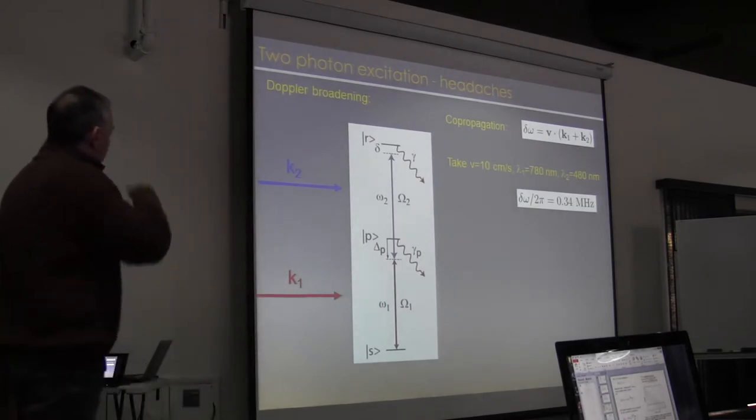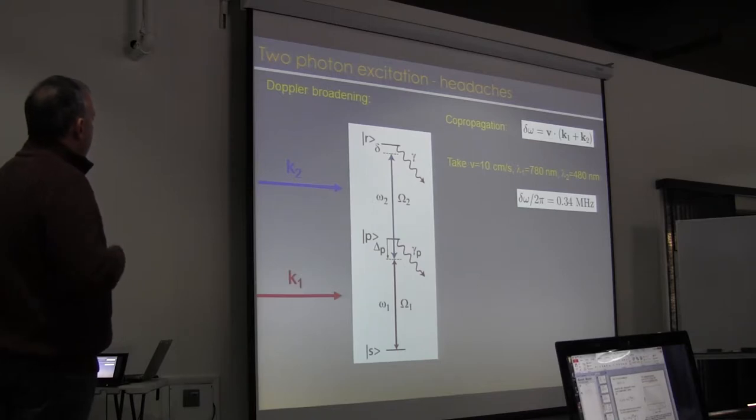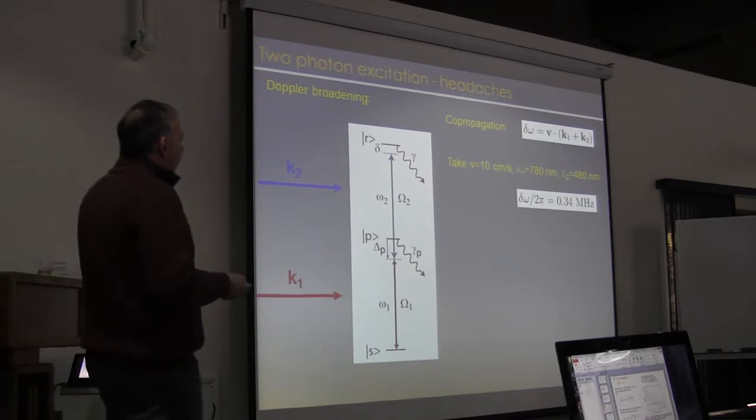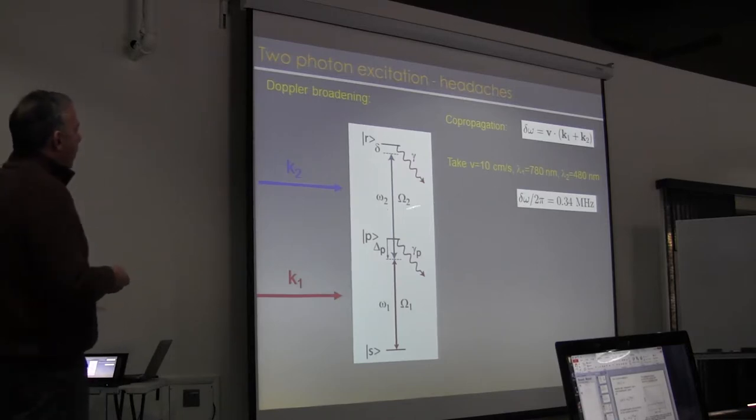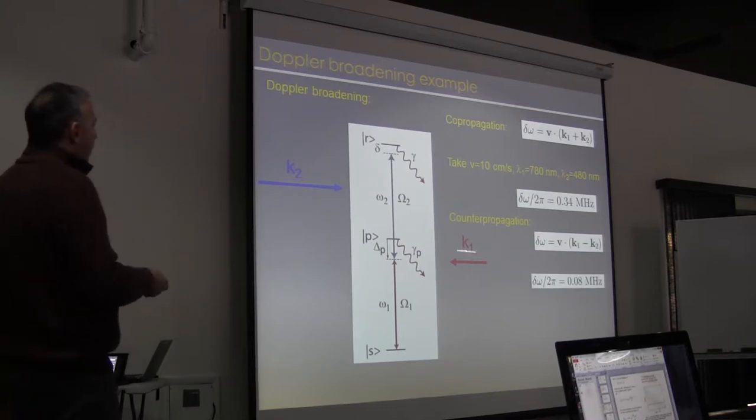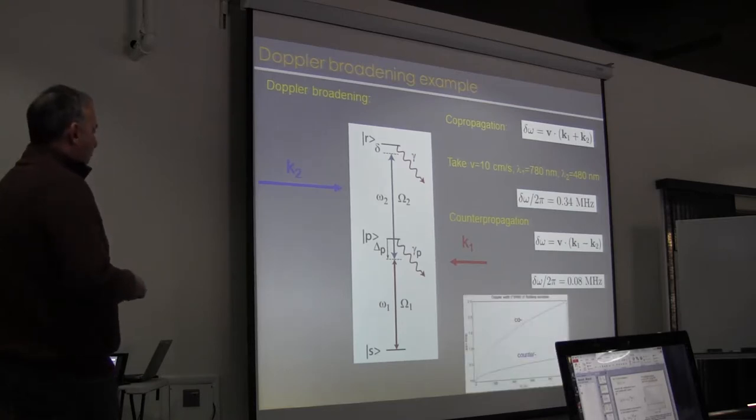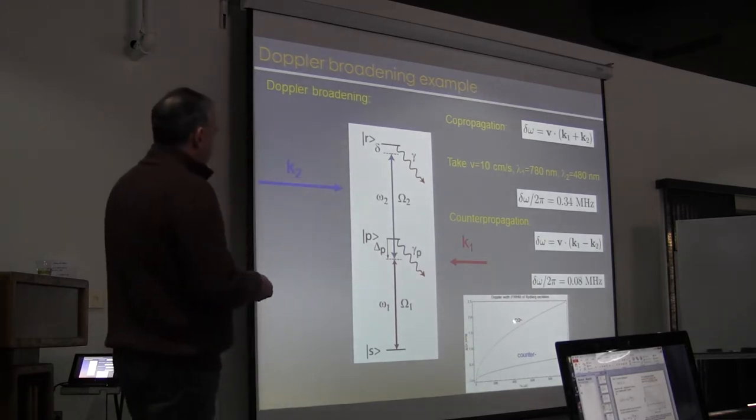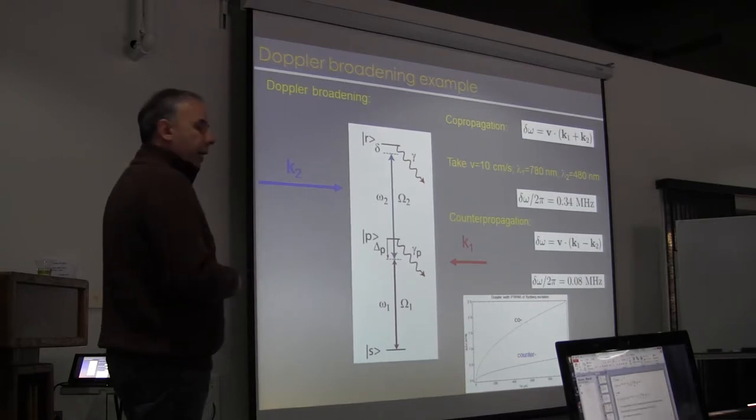The other issue with this two photon excitation is the Doppler problem. If we co-propagate the two photons, then we pick up the full Doppler shift. So we get a Doppler frequency shift, which is the atom velocity times K1 plus K2. And if I take a cold atom, let's say a 10 centimeter per second velocity, we get about a third of a megahertz Doppler shift. If I counter-propagate these two beams, then the Doppler shift is the difference of the wave vectors, and I can greatly reduce the Doppler problem. So you see that here. This is the Doppler broadening in frequency units versus the temperature of the atoms for co-propagating versus counter-propagating beams. So the counter-propagating case is to be preferred.